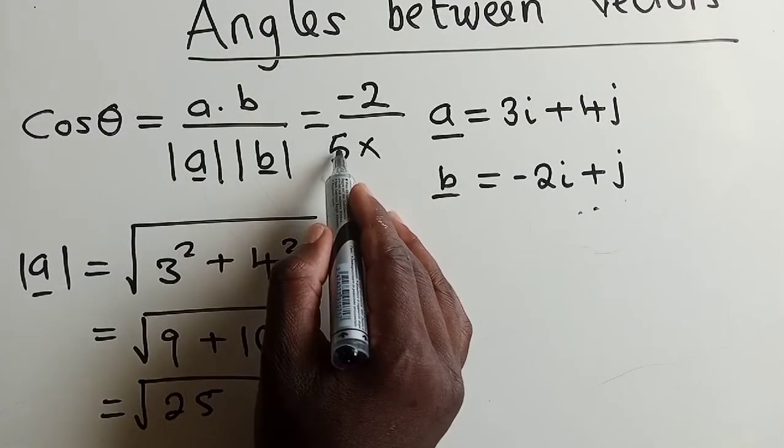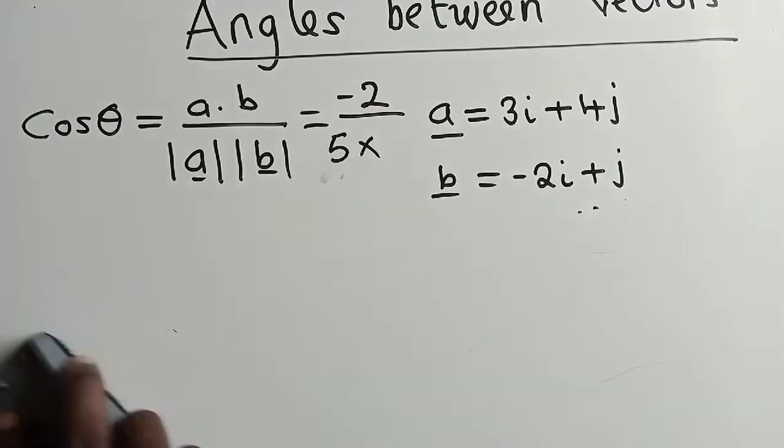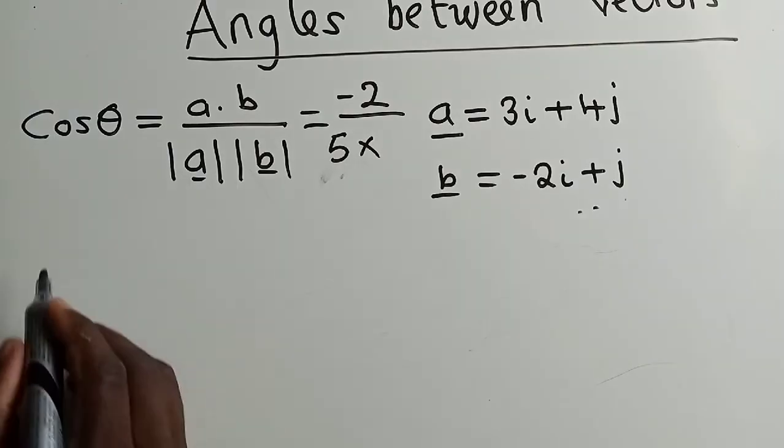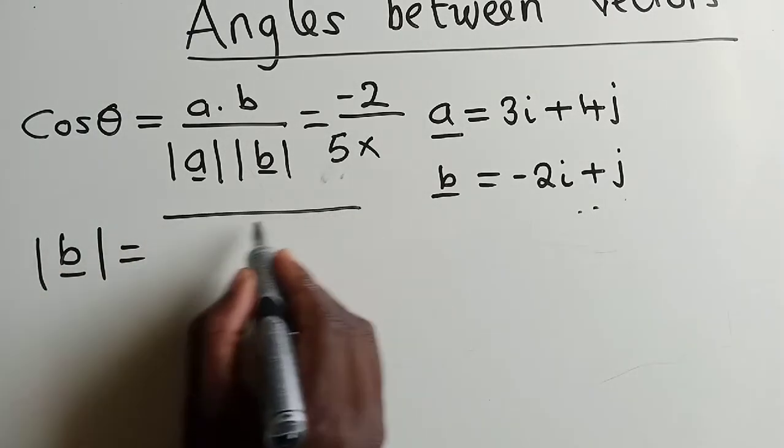This is what I've written here, it's 5, times, we now need to find the magnitude of what? The magnitude of B, vector B. The magnitude of vector B will be almost the same procedure.